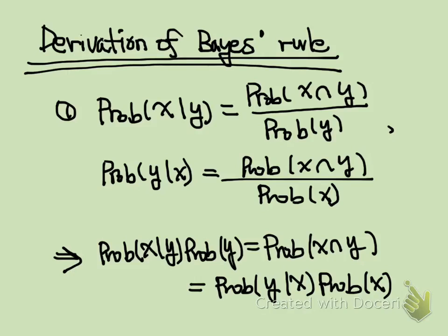First, conditional probability X given Y is defined by the probability of the intersection between X and Y divided by probability of Y. In the same manner, probability of Y given X equals the probability of the intersection between X and Y divided by probability of X. Now, for both equations, let's multiply each side by the denominators. Then we get that probability of X given Y times probability of Y equals the probability of X intersection with Y, and this equals probability of Y given X times probability of X.